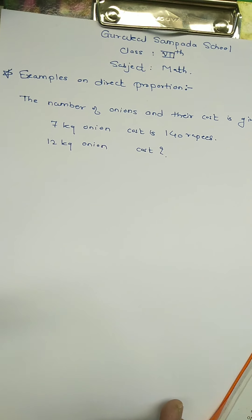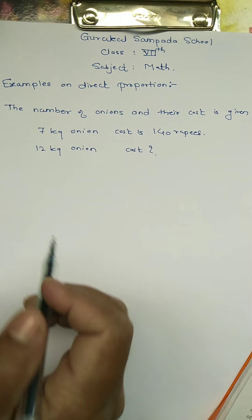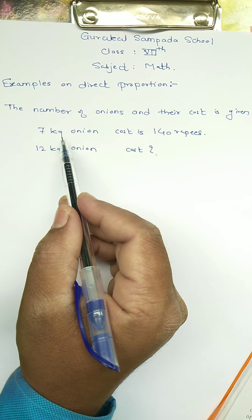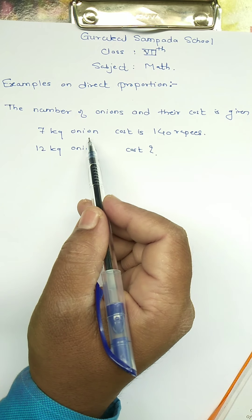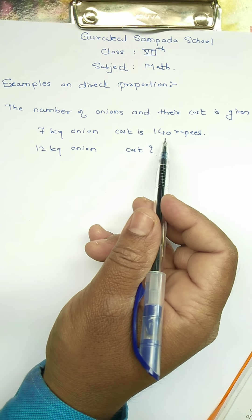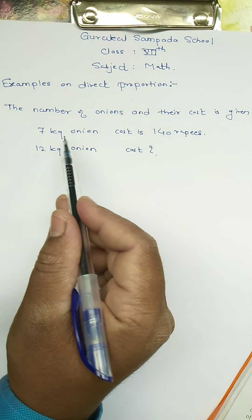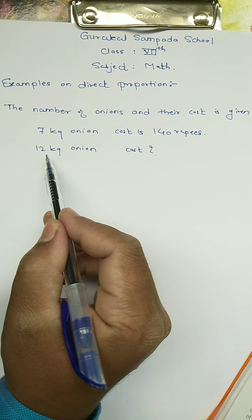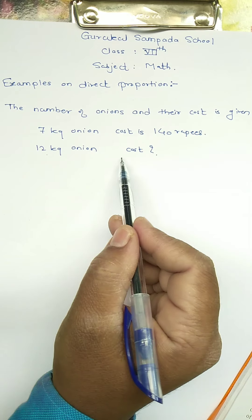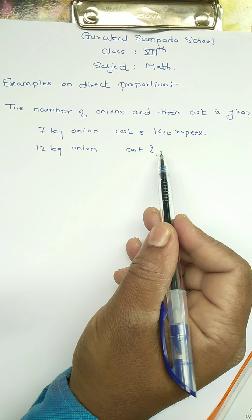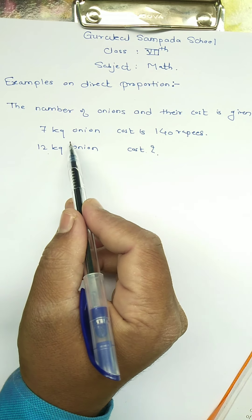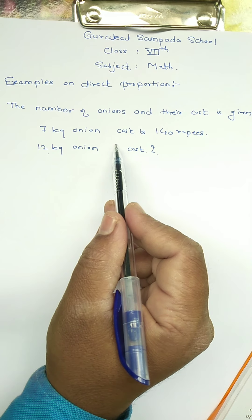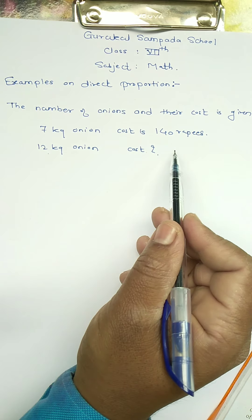These quantities vary in direct proportion, because if 7 kg onions require 140 rupees, and now we have to purchase 12 kg, the quantity increases, so the cost will also increase.